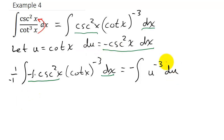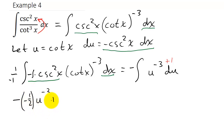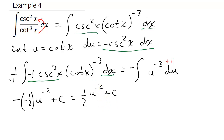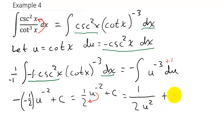Adding 1 to the exponent gives u to the negative 2. I multiply by the reciprocal, giving negative times negative one-half, plus c. This gives me one-half u to the negative 2 plus c. Moving the negative exponent to the denominator gives 1 over 2u squared plus c.